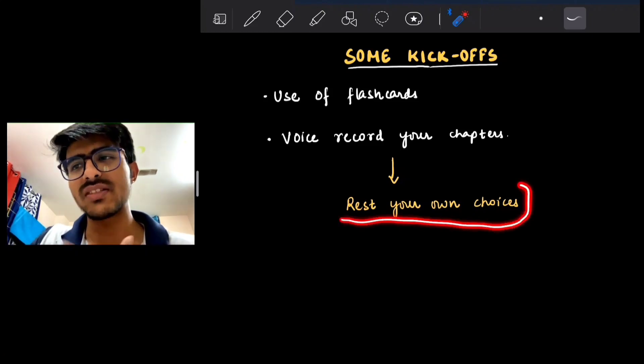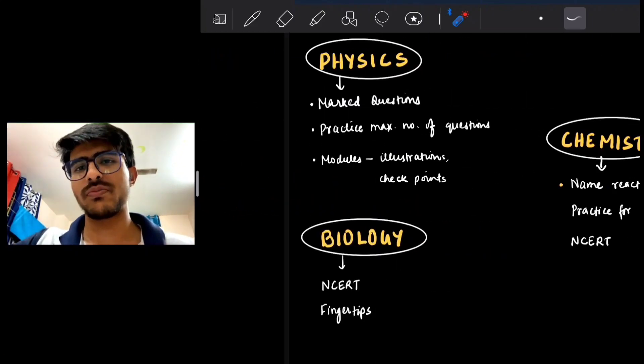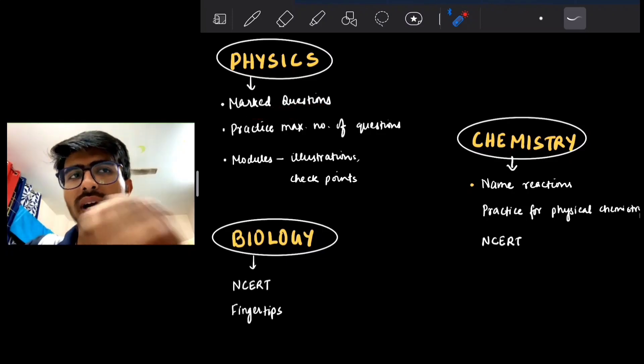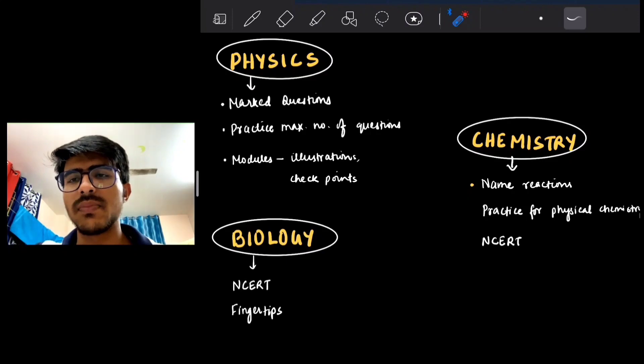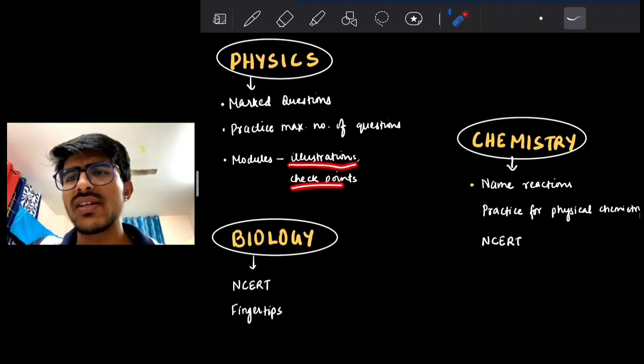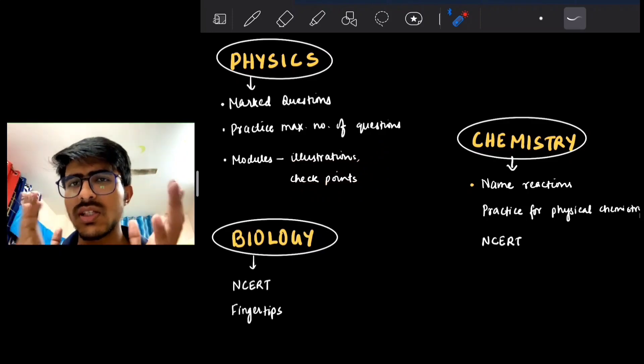Talking about your subjects—you have physics, chemistry, and biology totaling 720 marks with 200 questions. The second part has options, but be prepared for time management because in NEET 2021, many students complained about time management issues. For physics, you are left with practice questions—all the questions you had done in your modules or books like DC Pandey. Practice maximum number of questions because you need to brush off all the concepts. Focus on modules, major illustrations, and checkpoints. Don't miss the basic concepts.